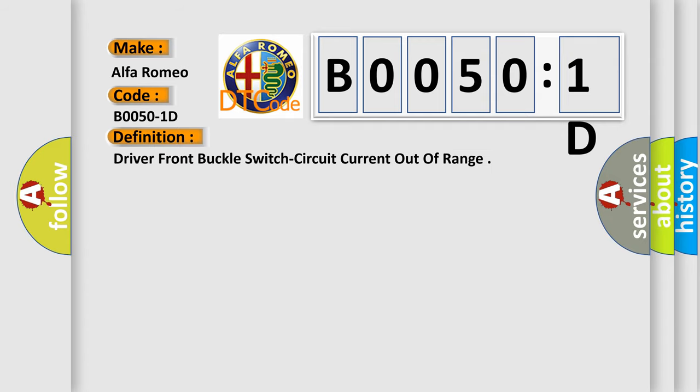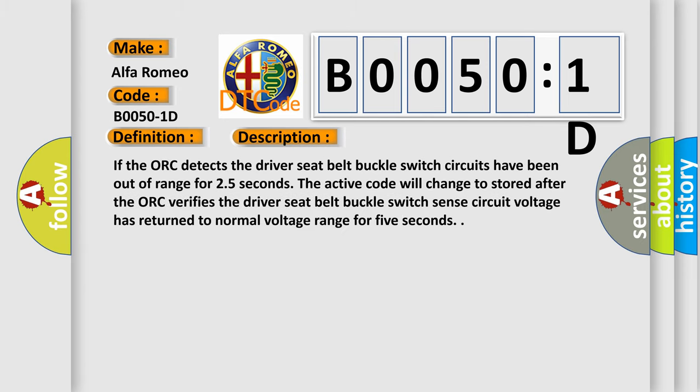The basic definition is Driver front buckle switch circuit current out of range. And now this is a short description of this DTC code. If the AUK detects the driver seat belt buckle switch circuits have been out of range for 2.5 seconds, the active code will change to stored after the AUK verifies the driver seat belt buckle switch circuit voltage has returned to normal voltage range for 5 seconds.